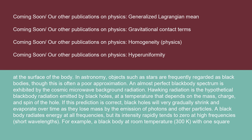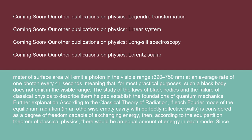A black body radiates energy at all frequencies, but its intensity rapidly tends to zero at high frequencies, i.e., short wavelengths. For example, a black body at room temperature — 300 K — with one square meter of surface area will emit a photon into the visible range (390 to 750 nanometers) at an average rate of one photon every 41 seconds, meaning that for most practical purposes such a black body does not emit in the visible range.